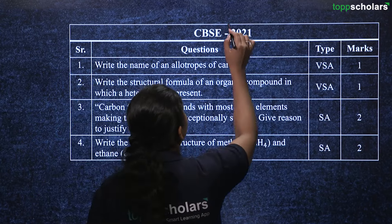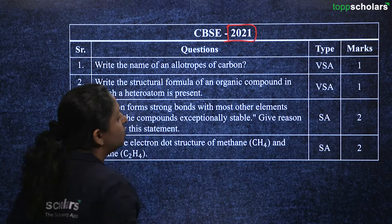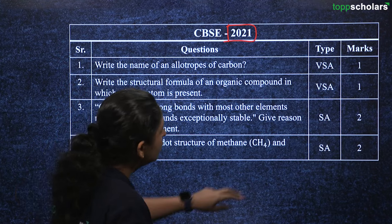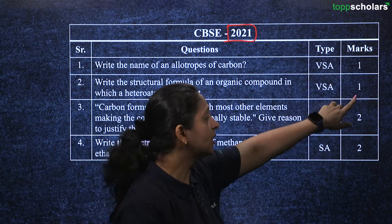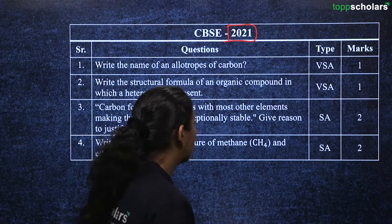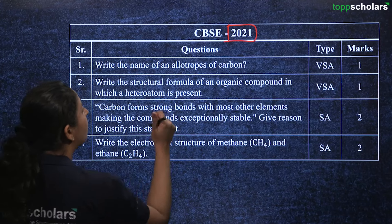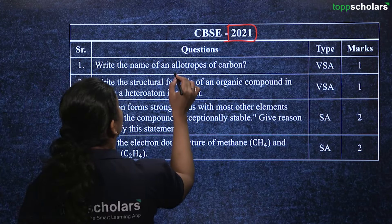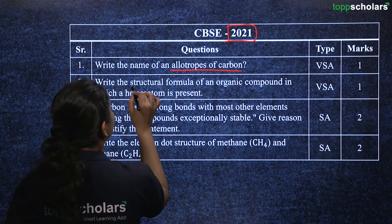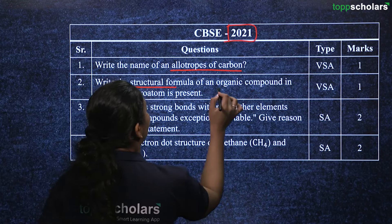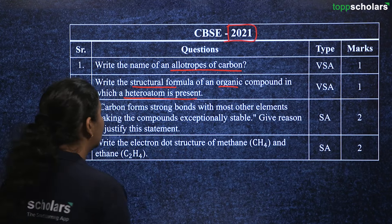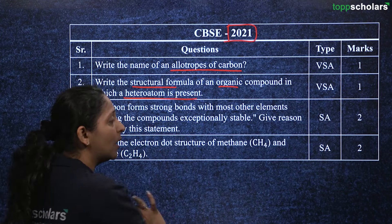For the year 2021 paper, you have four questions — two very short answer worth one mark each, and two short answer worth two marks each. The very short answer questions ask: write the names of allotropes of carbon, and write the structural formula of an organic compound in which heteroatoms are present. These are one mark questions requiring only a one-statement answer.